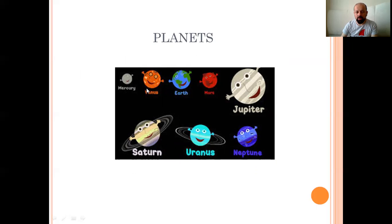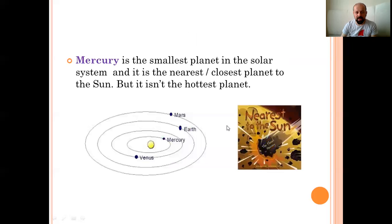Planets. Yes. Mercury, Venus, Earth, Mars, Jupiter, Neptune, Uranus and Saturn. Those are our planets in solar system. Mercury is the smallest planet in the solar system. And it is the nearest or closest planet to the sun. But it isn't the hottest planet. Mercury, Güneş sistemine, Güneş'e en yakın, Güneş sistemindeki en küçük gezegen ve Güneş'e en yakın gezegen. Fakat o en sıcak gezegen değil, Güneş'e en yakın olmasına rağmen.